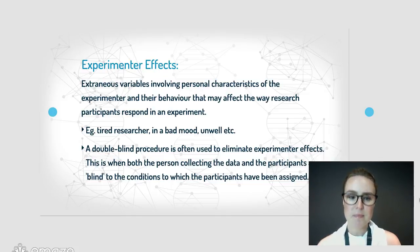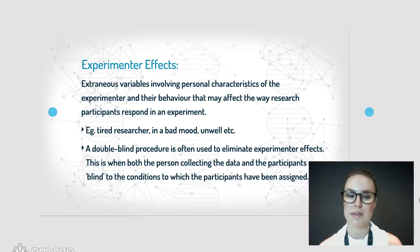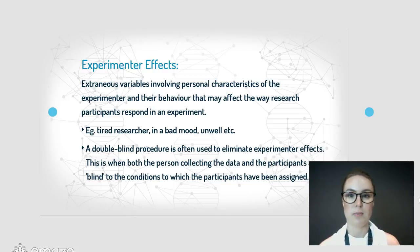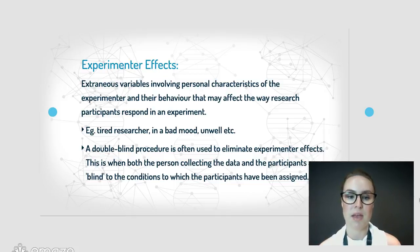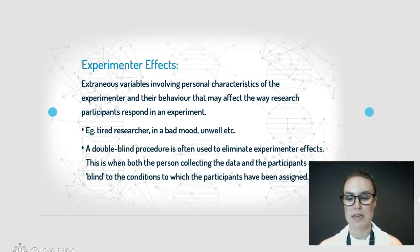In this case, a double blind procedure is used to eliminate experimenter effects. This is when not only are the participants blind as to whether they're in the experimental or control group, but the experimenter is also blind — when gathering data from someone, they have no idea which group that person is in. This is really important because it means they can be sure they haven't impacted the results in any way.